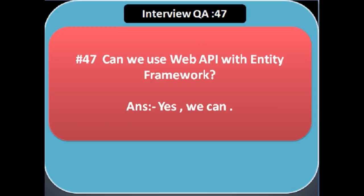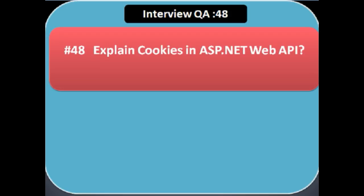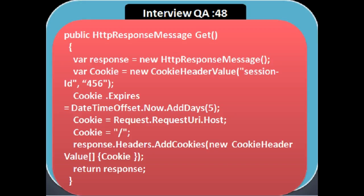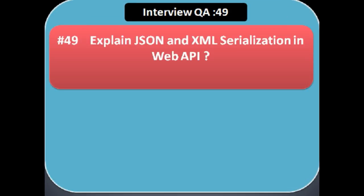Next question: can we use Web API with Entity Framework? Yes, of course we can. Next question: explain cookies in ASP.NET Web API. A cookie is a piece of information sent by the server as the HTTP response — it allows the client and server to share state. We create an instance of the CookieHeaderValue class for adding the cookie to an HTTP response. Here, response.Headers.AddCookies() is used with the CookieHeaderValue class to return the response.